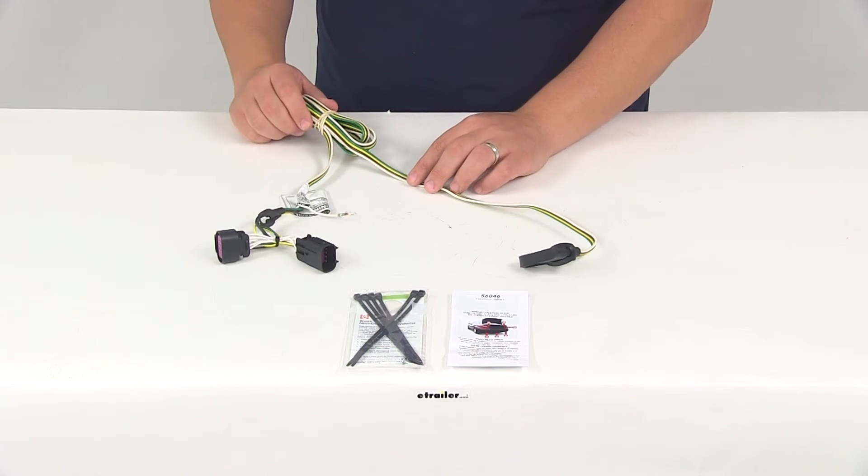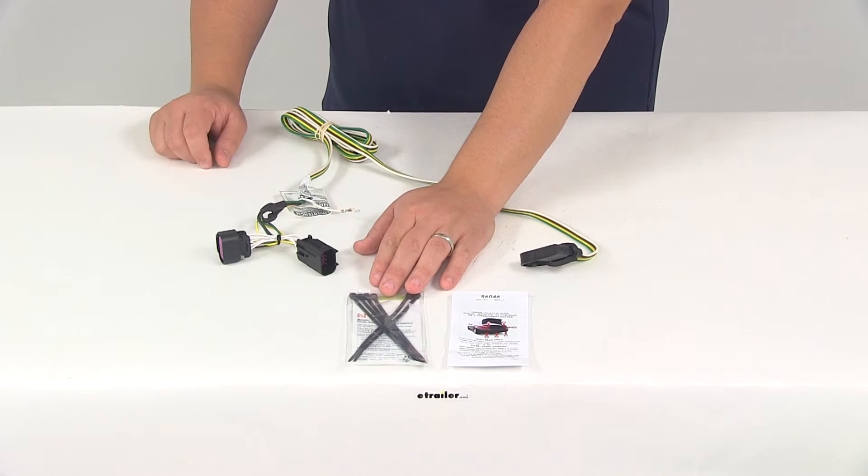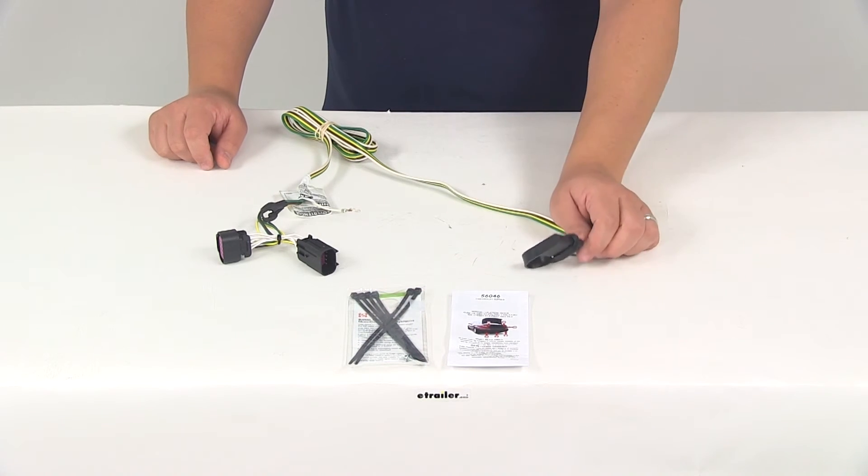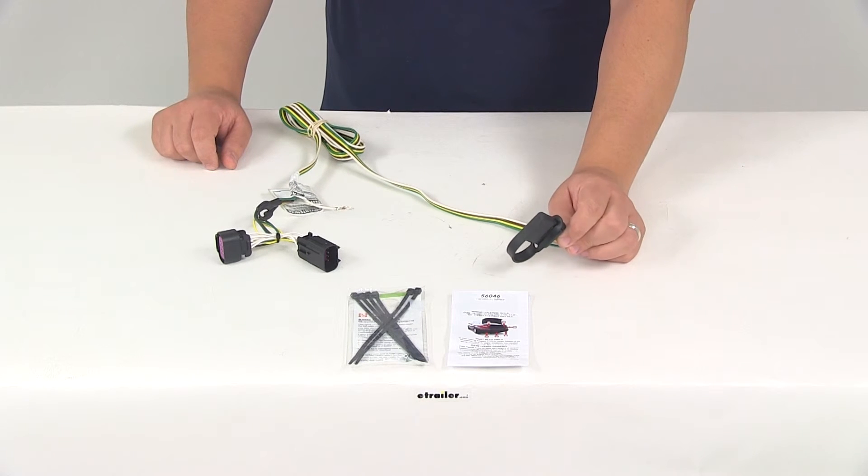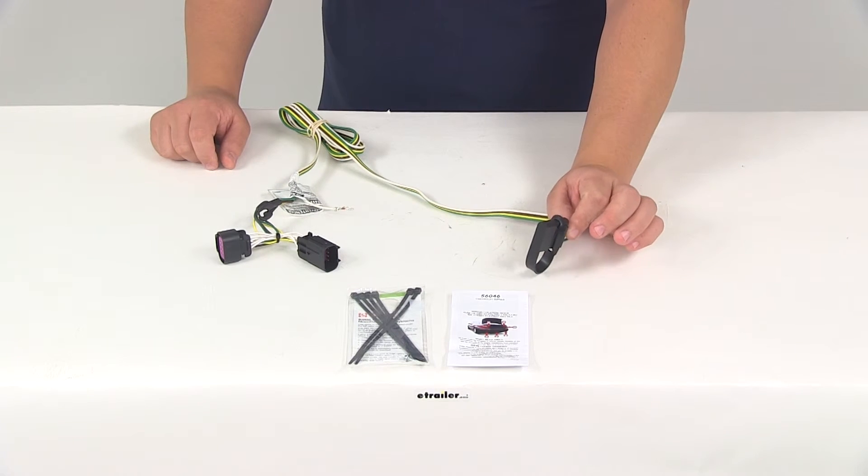Then you can secure your excess wires with the included zip ties. Once your installation is complete, the four-way connector will be stowed in an out-of-the-way location within your rear cargo area when it's not being used.